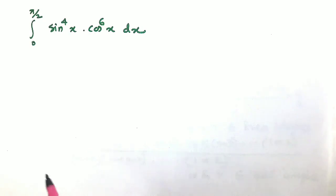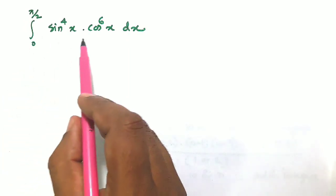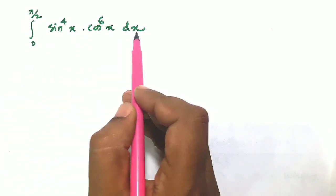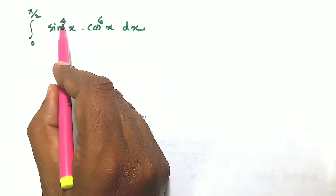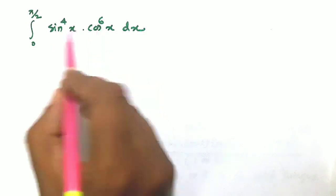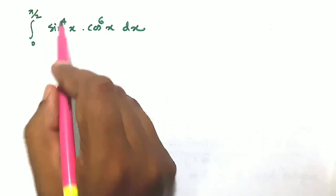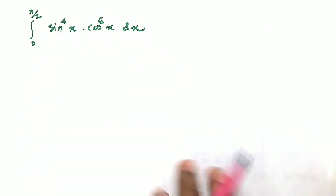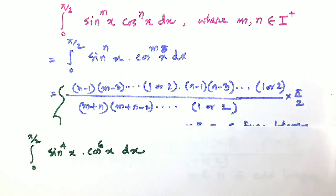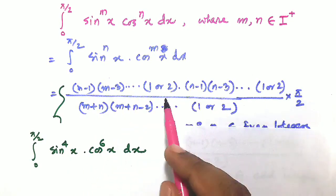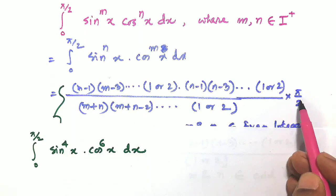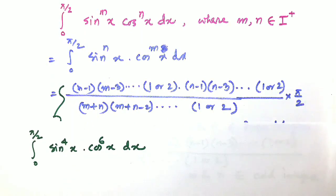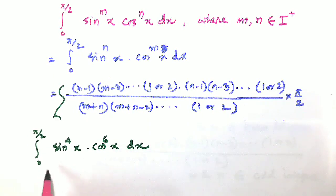Our example is: integration 0 to pi by 2 of sin x to the power 4 into cos x to the power 6 dx. Here m is 4 and n is 6 — both are even positive integers. So we shall use the first formula, which includes the pi upon 2 factor at the end.